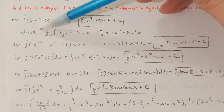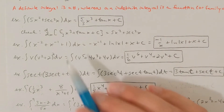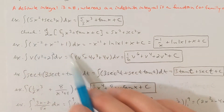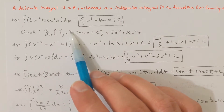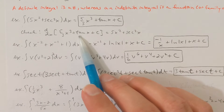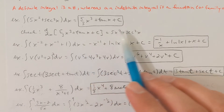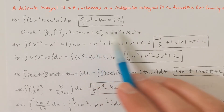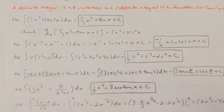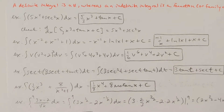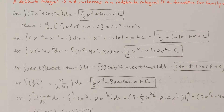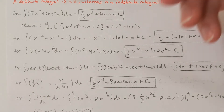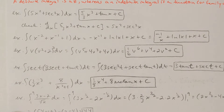If I want to check this, I take a derivative and I should get the integrand. The derivative of 5/3 x cubed would be 5x squared. Derivative of tan x is secant squared x. Derivative of a constant is always 0. You don't need to check your answers, but a nice thing about antiderivatives is that you'll always know if you get the right answer — take a derivative and see if you get back to the integrand you were originally given.